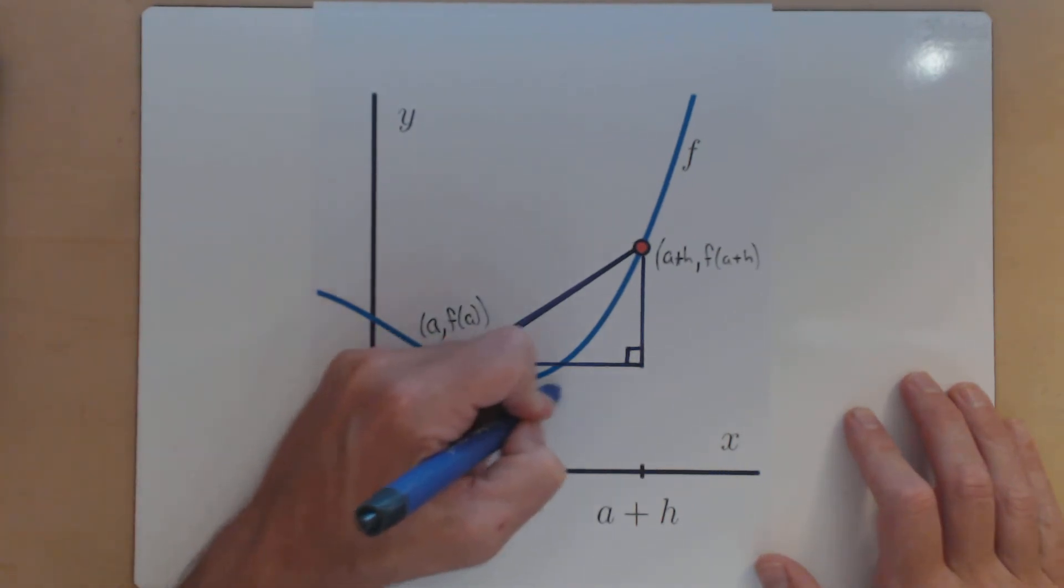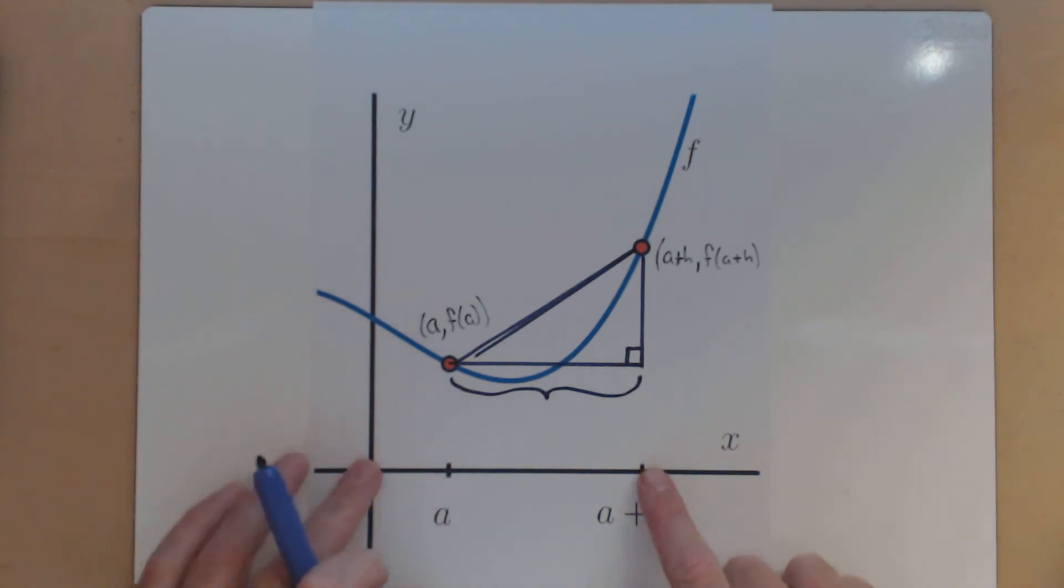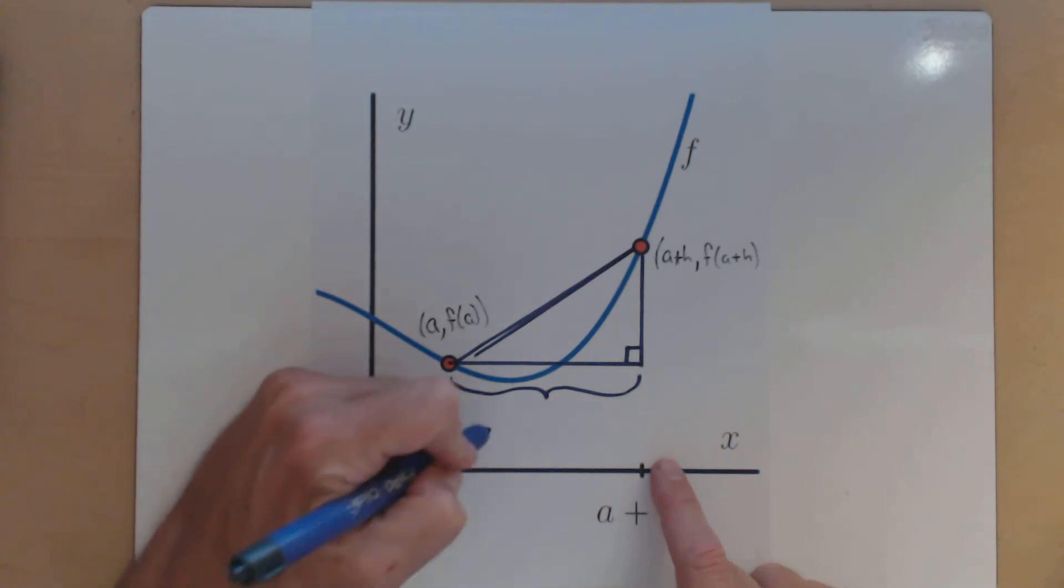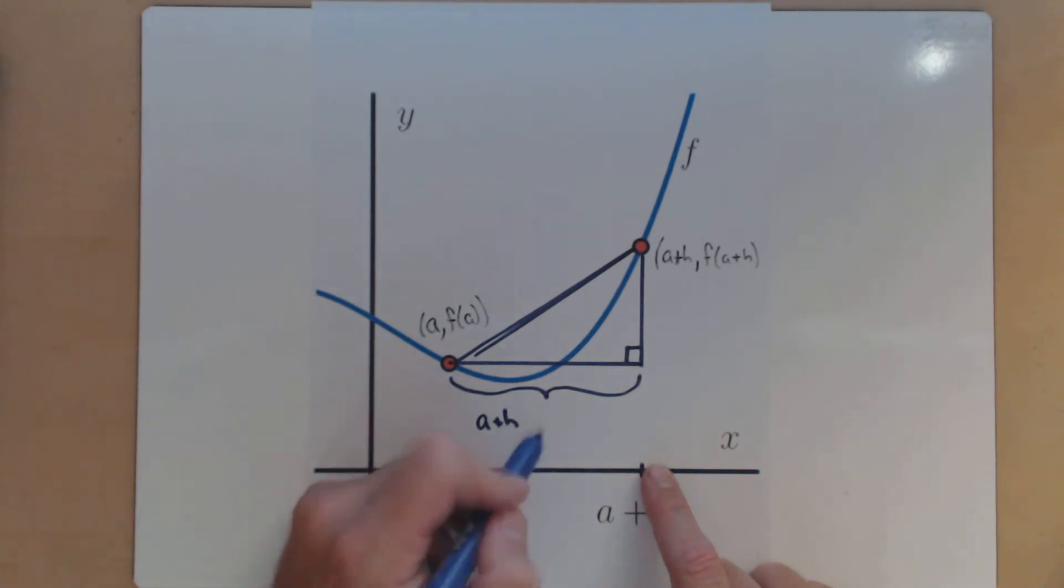So this leg here, what is the length? Well, all the way to here is a plus h, although from here to here is a. So what we're going to do is take a plus h, the whole distance, and subtract out a. So the distance of that leg is just h, because that's the distance between a and a plus h.